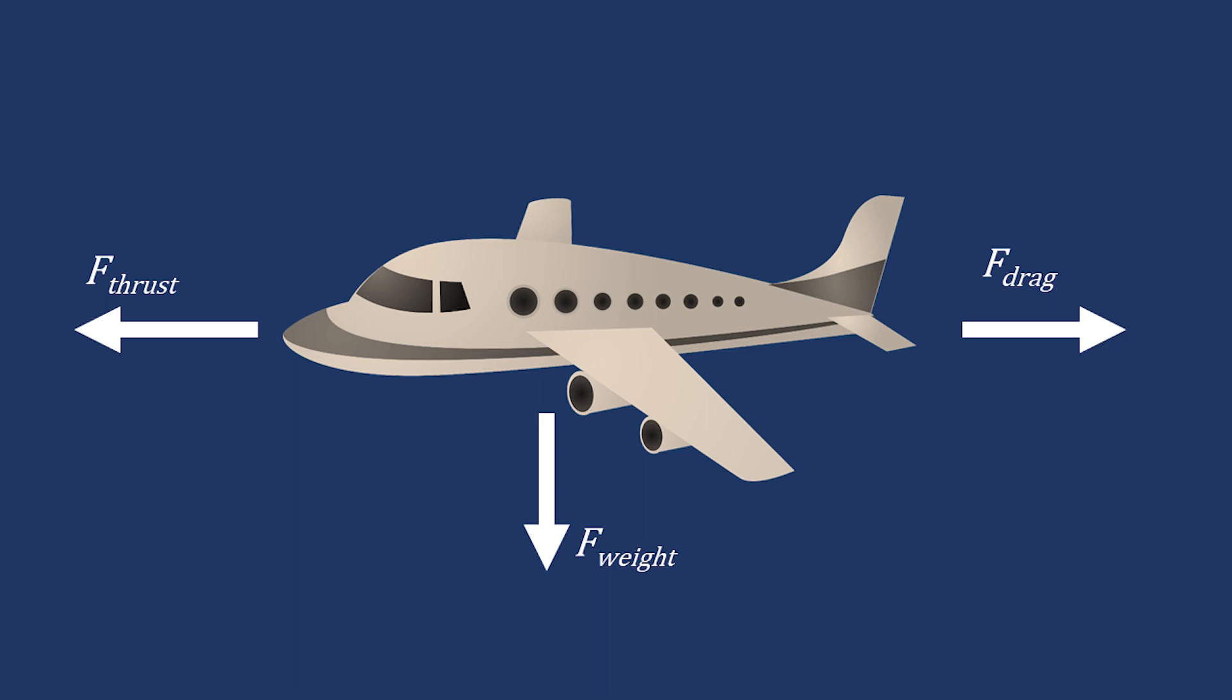So drag is a force that opposes thrust. And finally, airplanes have these things called wings which are able to generate a magical force called lift when air passes around them. This force lifts the airplane up from the ground, opposing the weight and allowing us to fly. That's all pretty straightforward.